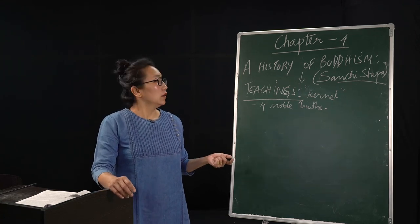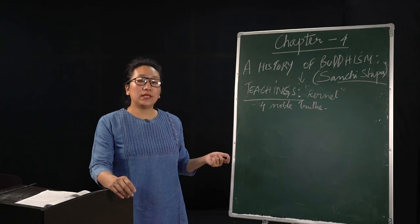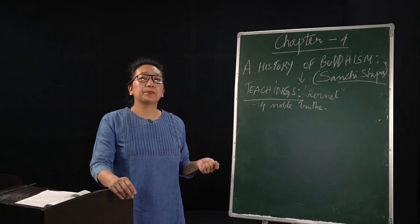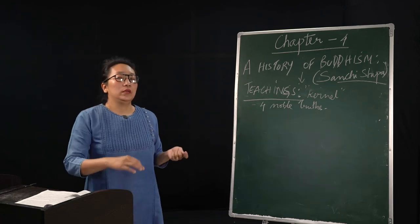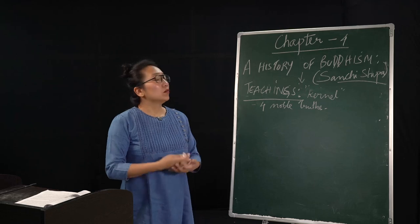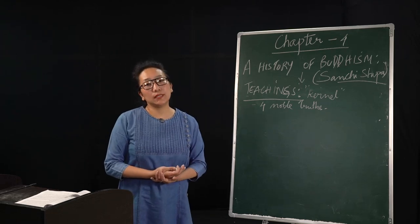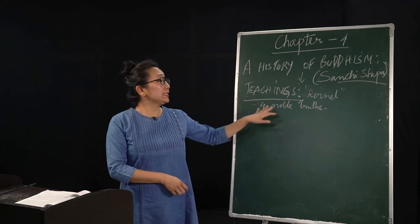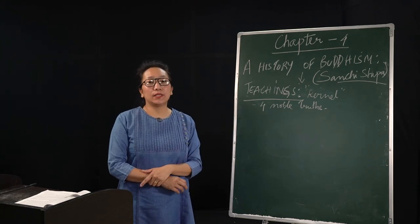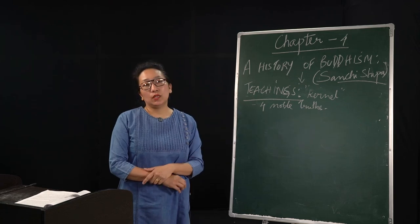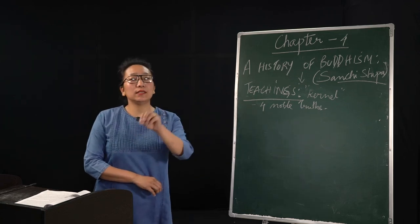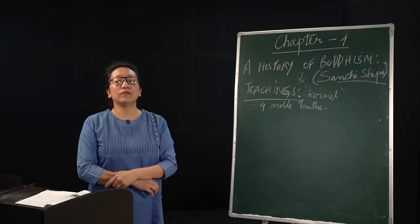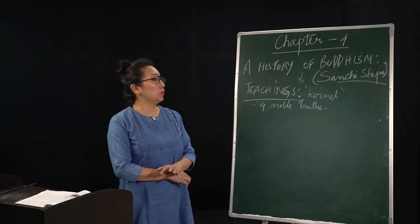And sufferings, the Noble Truth says that they could be removed if one knows the cause. And the sufferings could also cease only if one knows how to control that. So that was the Four Noble Truths. And it is said that when he gave the sermon on the Four Noble Truths in Sarnath, he attracted five disciples immediately with his first sermon. And those five disciples became his first followers. And that was the starting point.